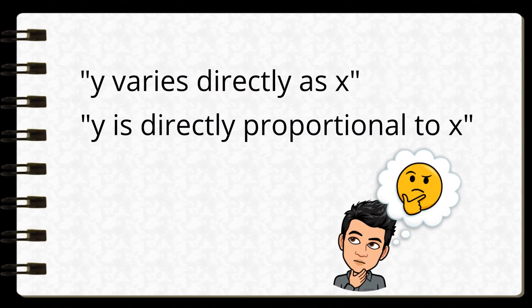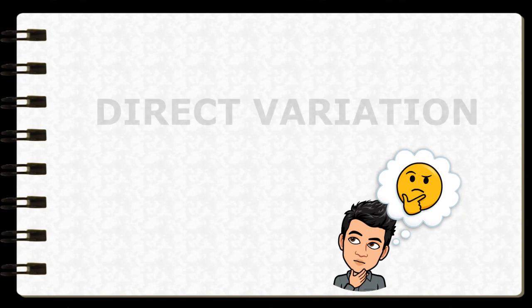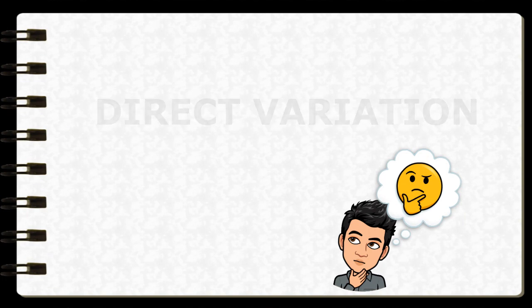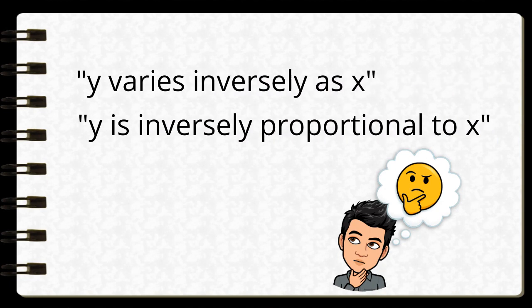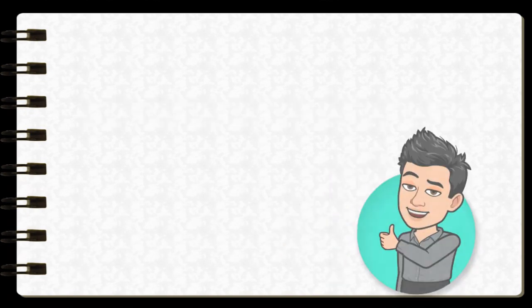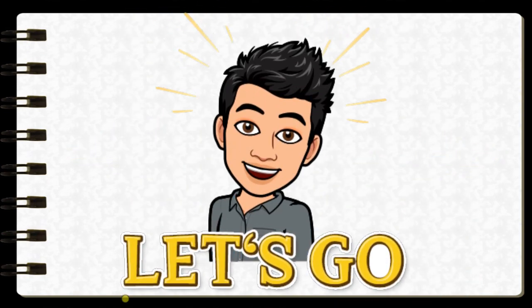So the statements y varies directly as x and y is directly proportional to x describe a direct variation. On the other hand, y varies inversely as x and y is inversely proportional to x describe an inverse variation. Now, let us see the real-life examples of variations.